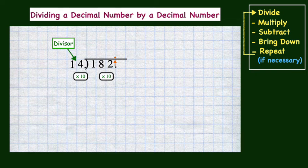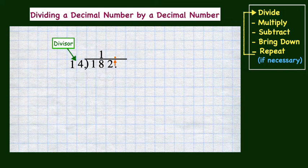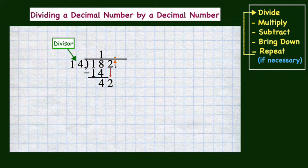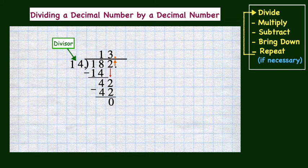And now we have a whole number in the divisor and we can divide like we normally would after placing the decimal point from the dividend up into the quotient. Since 14 cannot divide into 1, we'll move to the next digit to get the number 18. 14 divides into 18 one time. Next we multiply and 1 times 14 is 14. Then we subtract to get a difference of 4. Now we bring down the next digit in the dividend and we have the number 42. 14 divides into 42 three times. 3 times 14 is 42. After subtracting, we have a zero remainder. With no more digits to bring down from the dividend, we are done.